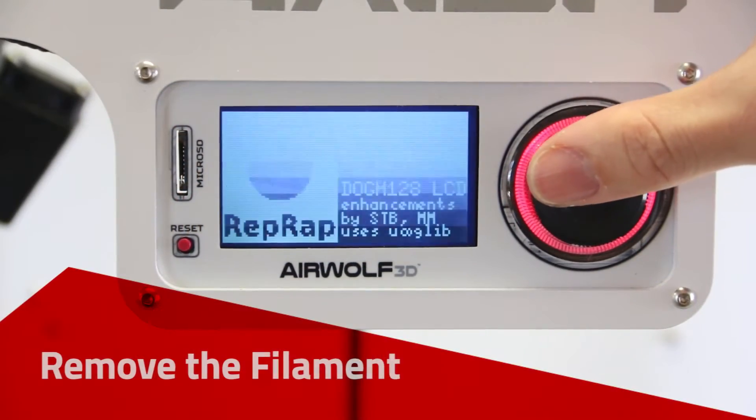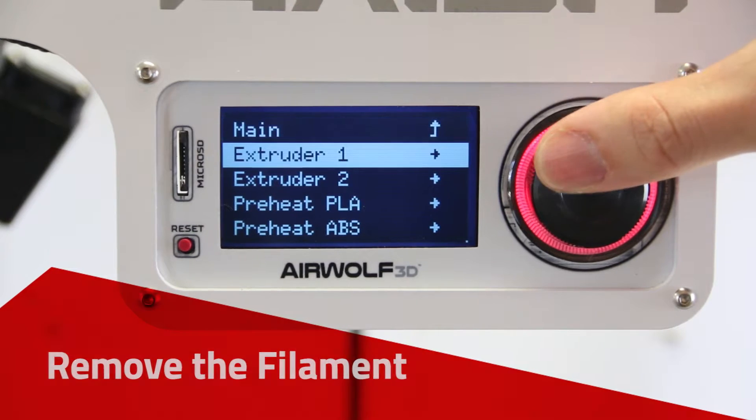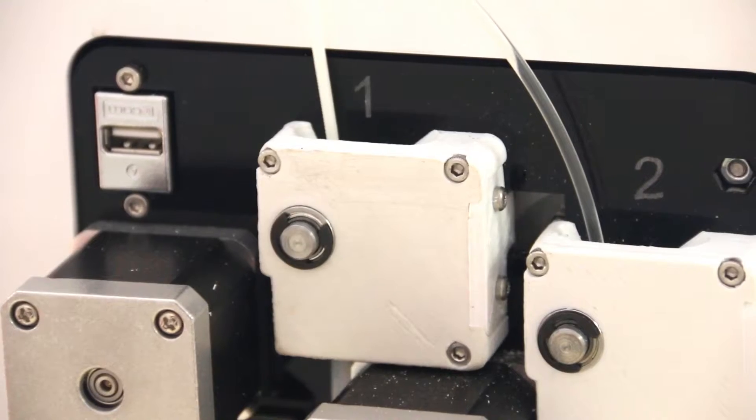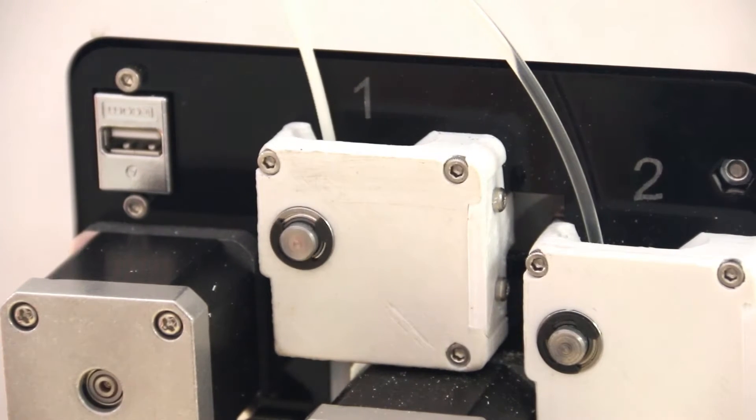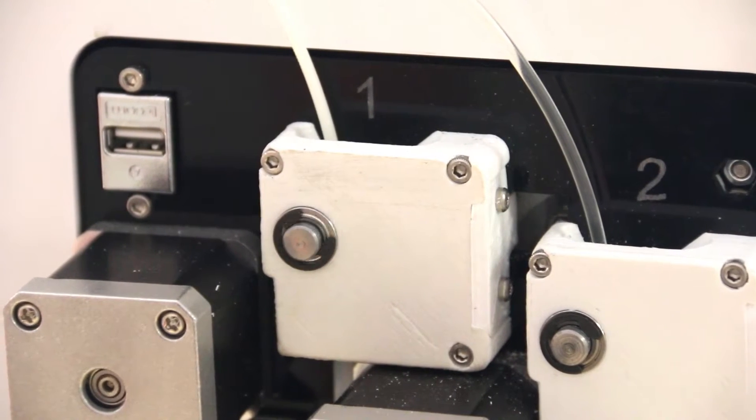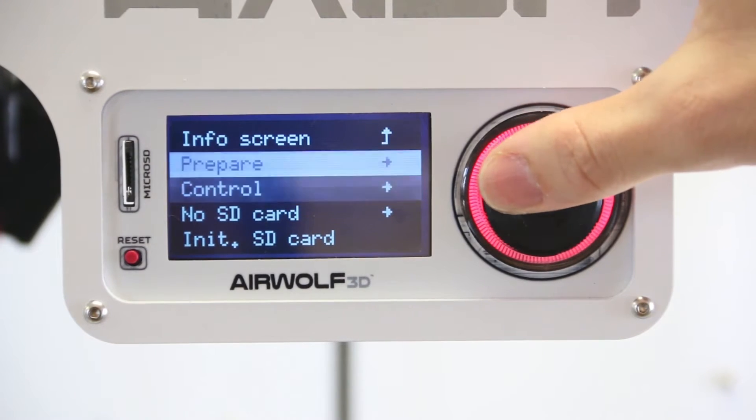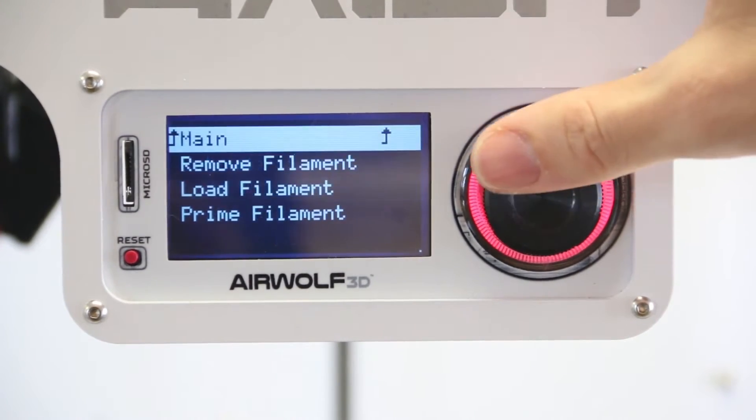Before changing the nozzle, remove the filament from the machine using Remove Filament on the LCD. On the Axiom Single, you can go to Prepare Remove Filament. On the Axiom Dual, you can select Remove Filament under each extruder.